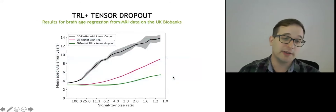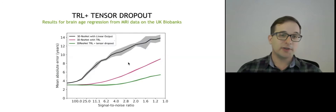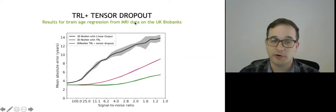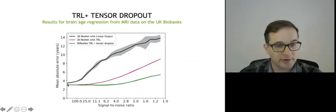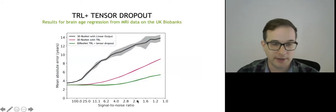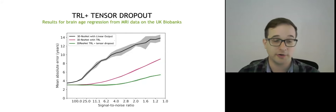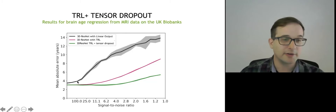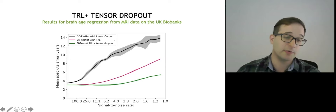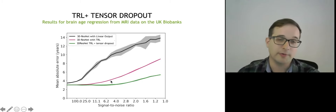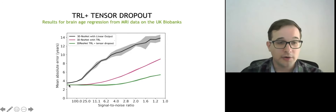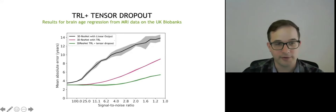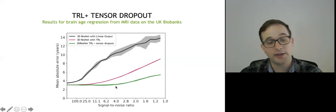We also used this to robustify models against noise. We trained a 3D ResNet to predict brain age from MRI data. A regular 3D ResNet with linear output layers sees error increase very quickly when Gaussian noise (modeling Rician noise from MRI capture) is added. With tensor regression alone, thanks to the regularizing effect of the low-rank factorization, you can increase noise substantially without drastically losing performance. And if you additionally apply tensor dropout, there is a large region in which you can add noise without any loss in performance.